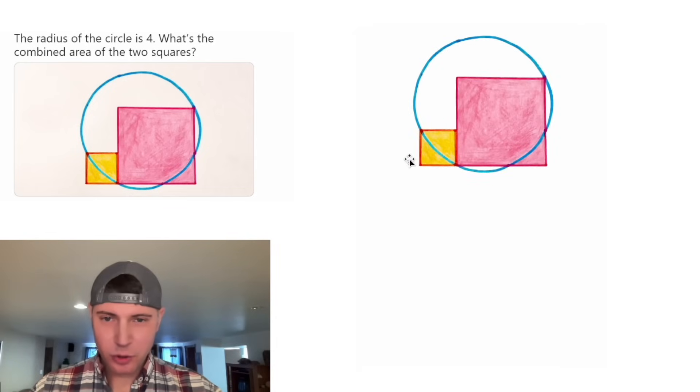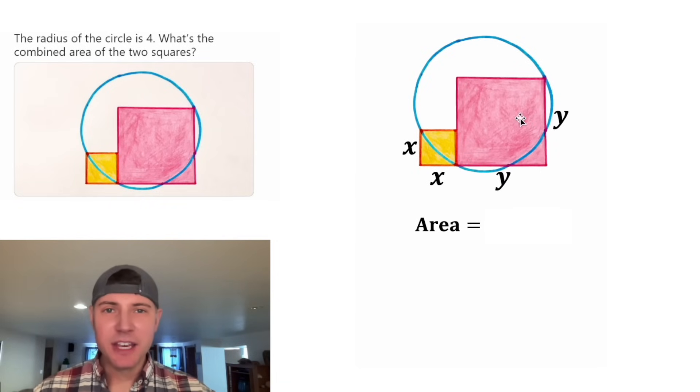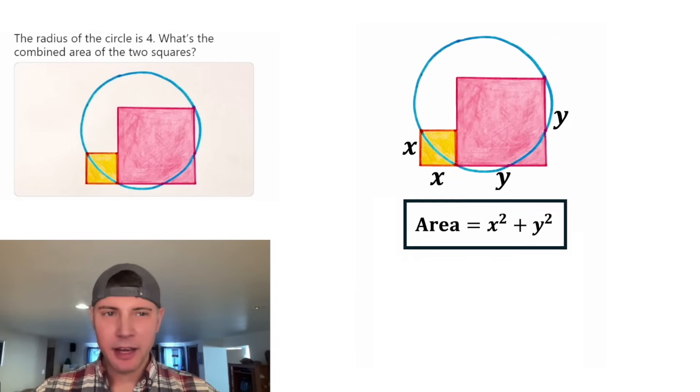Let's give this square side lengths of x and this square side lengths of y. Does that make sense? So the question's asking for the area of these two squares. So we're looking for x squared plus y squared. This is what we're trying to solve for. It is very important. Let's put a box around it and let's move it down here.